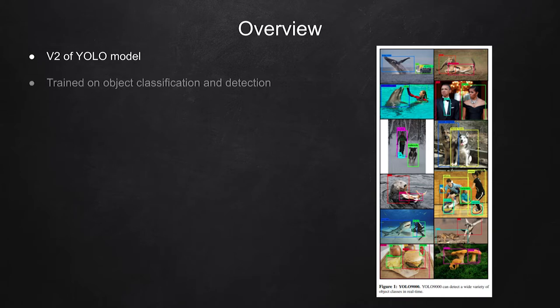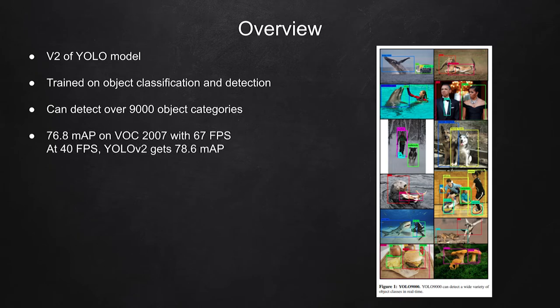This model is trained on object detection and classification datasets. Therefore, in this YOLO V2 model, it can detect over 9000 object categories. It achieves a MAP of 76.8 on VOC 2007 dataset with FPS of 67. Also, the model is able to achieve up to 78.6 MAP with 40 FPS.